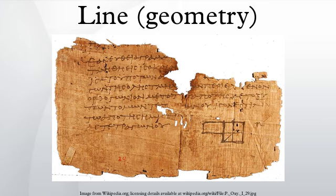Euclidean geometry: when geometry was first formalized by Euclid in the Elements, he defined a line to be breadthless length, with a straight line being a line which lies evenly with the points on itself. These definitions serve little purpose since they use terms which are not themselves defined. In fact, Euclid did not use these definitions in his work and probably included them just to make it clear to the reader what was being discussed. In modern geometry, a line is simply taken as an undefined object with properties given by axioms, but is sometimes defined as a set of points obeying a linear relationship when some other fundamental concept is left undefined.